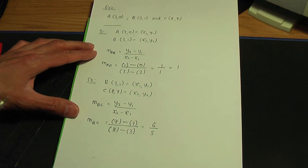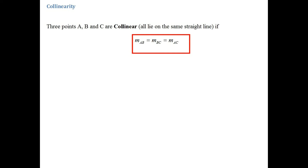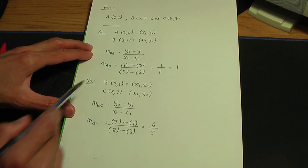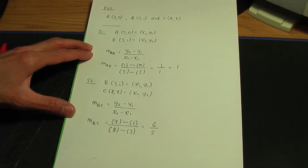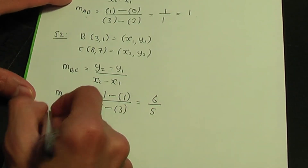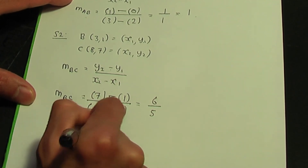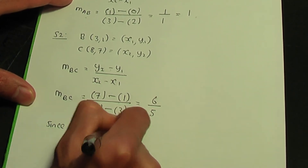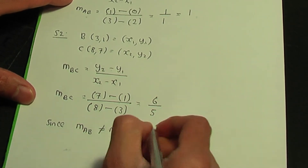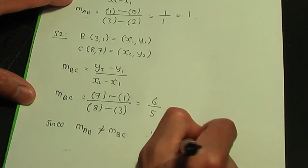A, B and C are only collinear if M(AB) = M(BC). M(AB) is 1 and M(BC) is 6/5 — they're not equal. So that implies they're not collinear. Since M(AB) does not equal M(BC), the points are not collinear.